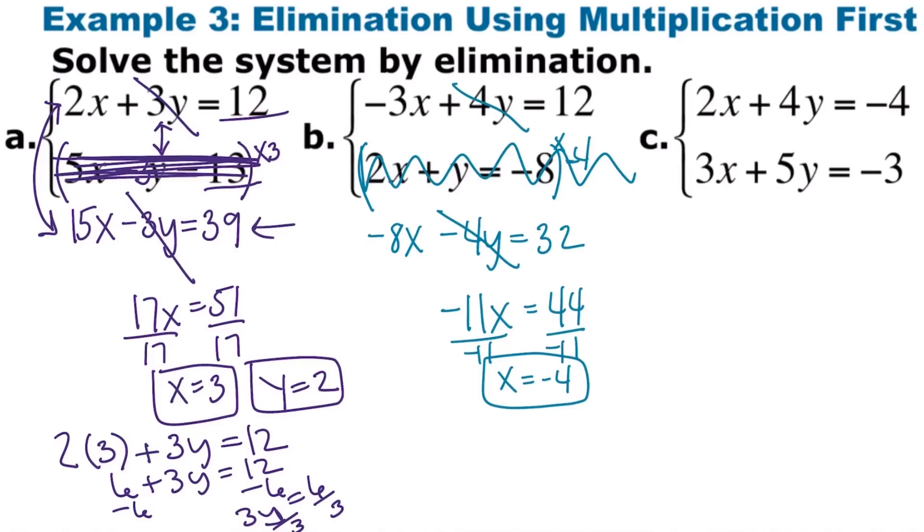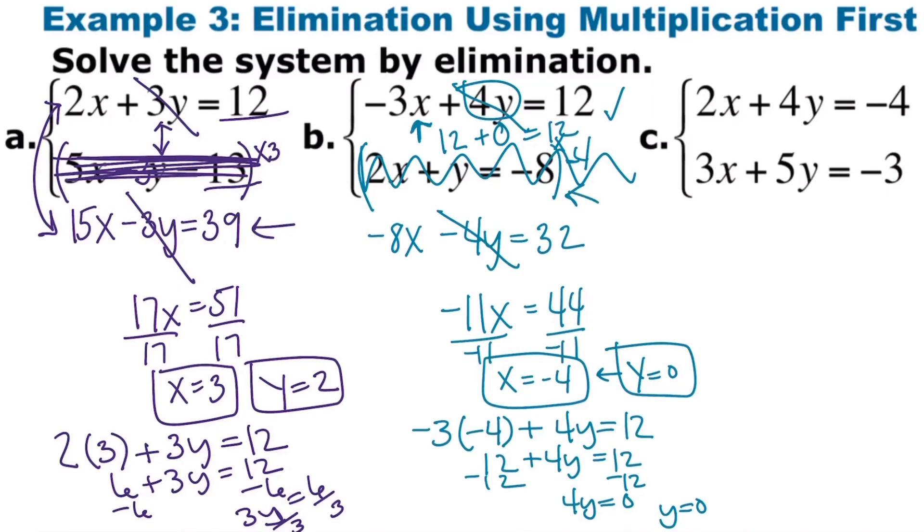We're going to solve for x to get x is negative 4. Plug into either one, so let's plug into the first one. So negative 3, we're saying x is negative 4, 4 plus 4y, we don't know what y is yet, equals 12. Just replace that x with what we think it is. And then go ahead and solve. You want to go ahead and check that. You can plug it into either one. If I plug it into the first one, negative 3, we said x is negative 4, would get us 12, plus 4 times 0 is 0, which gets us 12. It works out. Make sure you check it with that one as well.